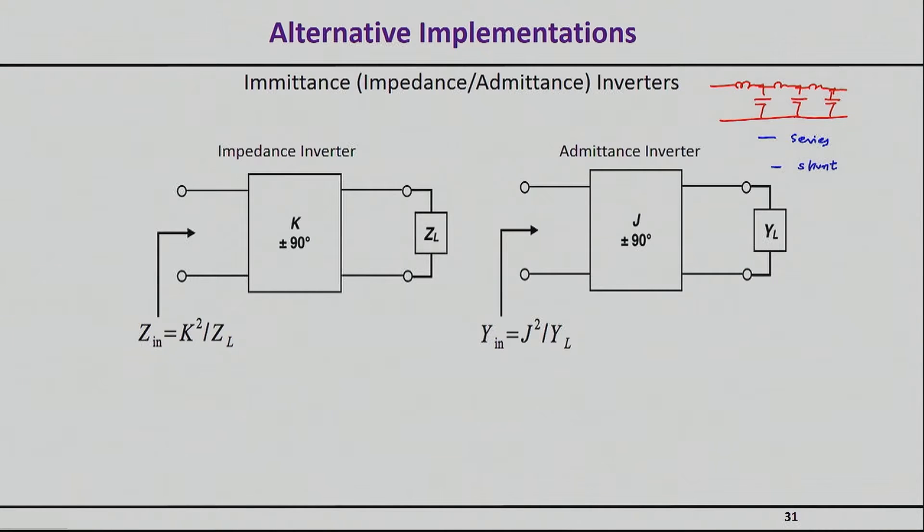So the way that we get around this annoyance that we have so far is by using this key device, which we will see many, many times, called an inverter. So an inverter is a mathematical construct that basically says that all that it does is that it inverts the impedance, as its name says.